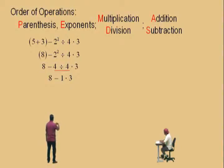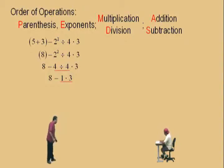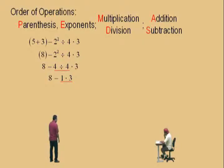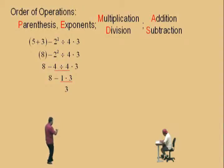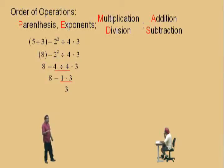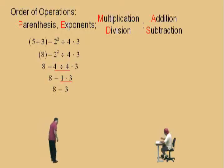Now, do we have any multiplications and divisions, Charlie? Yes. We have a subtraction and a multiplication. Which one do we do first? Multiplication. That's right. So 1 times 3 is what, Charlie? 3. Now remember, that's not a negative 1 — it's 8 subtract 1 times 3. That's how it's written. 1 times 3 is 3. And finally, 8 subtract 3 is what, Charlie? 5. There you go. That's our answer.